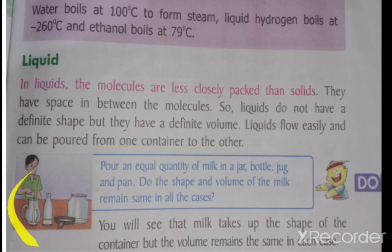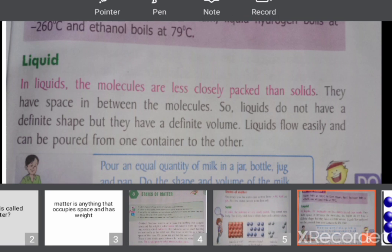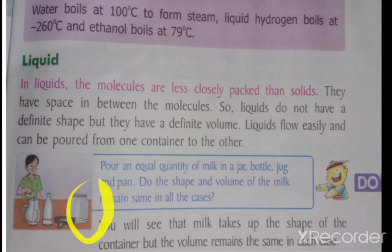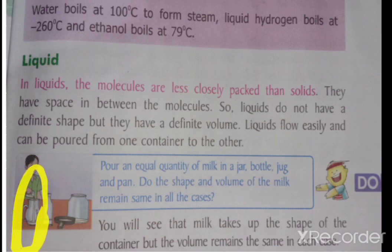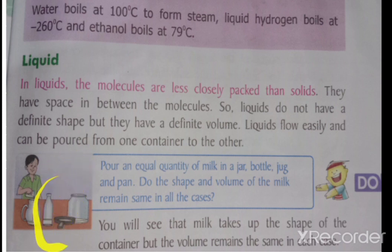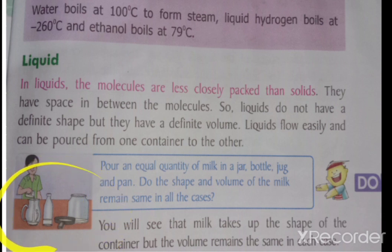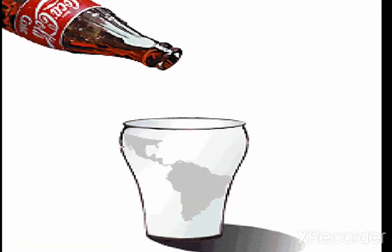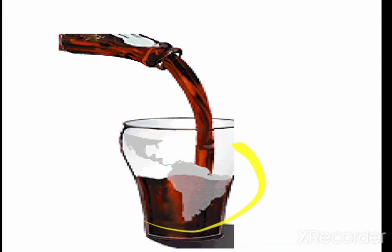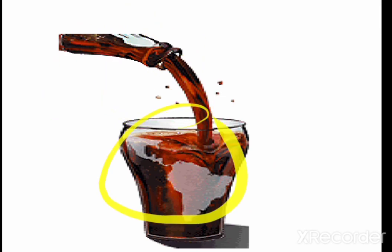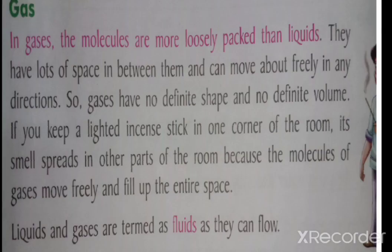Whether you pour liquid into a bottle, jar, or jug, if you pour the same amount into different containers the shape is different, but the volume remains the same. For example, filling a coke bottle — the shape of the bottle is different, but the volume stays the same.